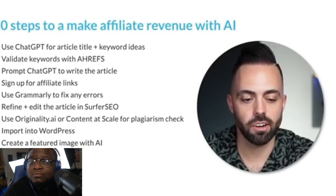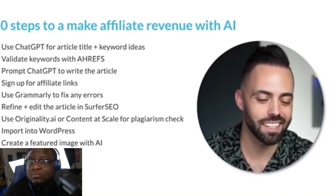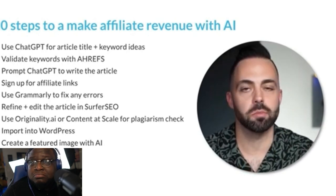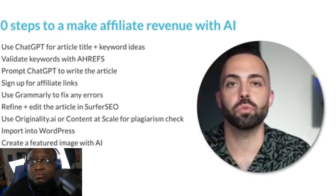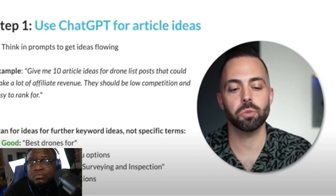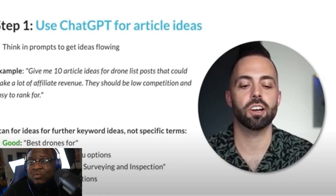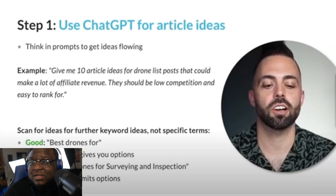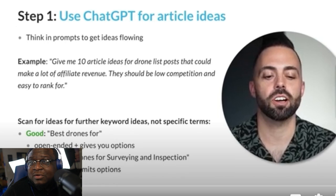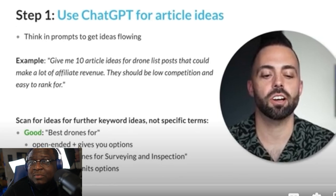So let's cover 10 steps to make affiliate revenue with AI. Here they are: using ChatGPT to create the articles, validating prompts, signing up for affiliate links, optimizing and editing the article, importing and publishing it. We're going to cover these one by one. We're going to do this in real time because this content creator is a wealth of knowledge. Step one, let's go.